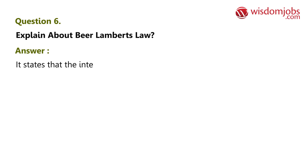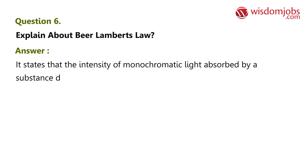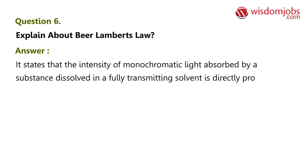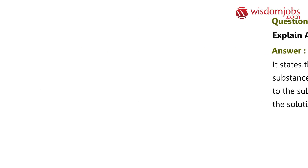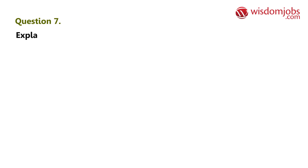Question 6: Explain Beer-Lambert's law. Answer: It states that the intensity of monochromatic light absorbed by a substance dissolved in a fully transmitting solvent is directly proportional to the substance concentration and the path length of the light through the solution.